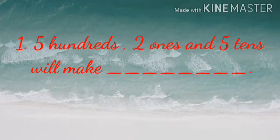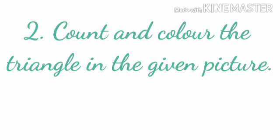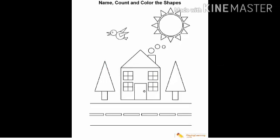Now, it's homework time. Number 1. 5 hundreds, 2 ones and 5 tens will make dash. Next, number 2. Count and color the number of triangles in the given picture. See the picture carefully and count the number of triangles.